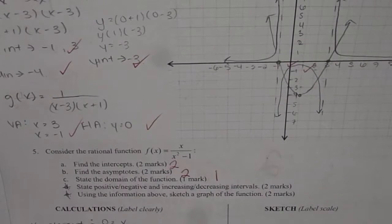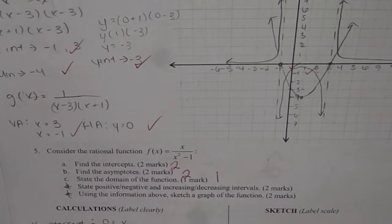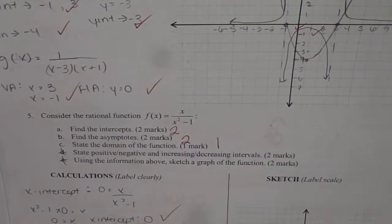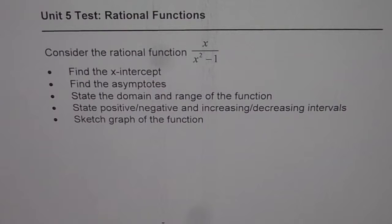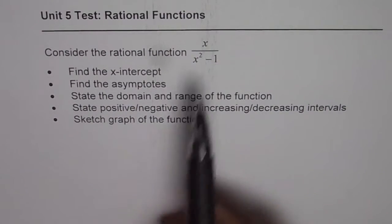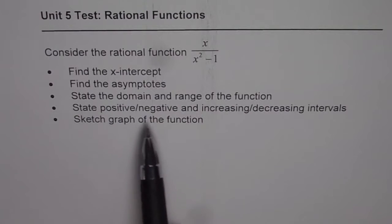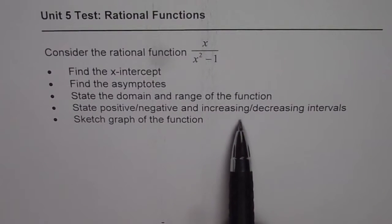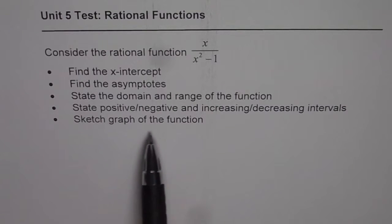Here is a test problem on rational functions. We will analyze the rational function f of x equals 2x over x squared minus 1. The questions are: find the x-intercept, find the asymptotes, state the domain and range of the function, state positive-negative and increasing-decreasing intervals, and sketch the graph of the function.